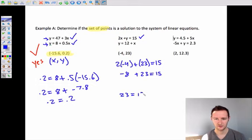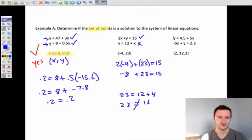23 equals 12 plus 4. 12 plus 4 is 16. That is not equal to 23. If they are not equal, that means that negative 4 comma 23 does not make this equation true. If it does not make one of the equations true, this is not a solution. It has to satisfy both using the same x comma y to be a solution.